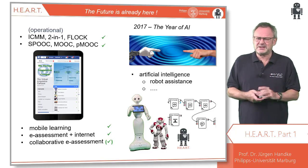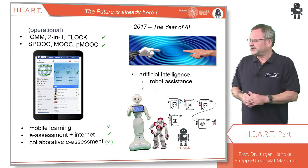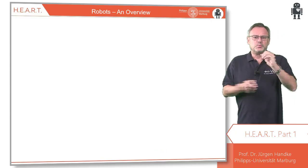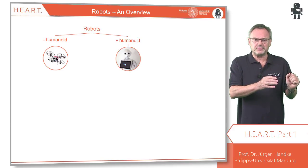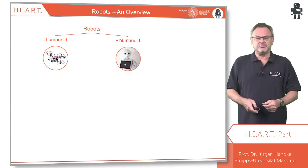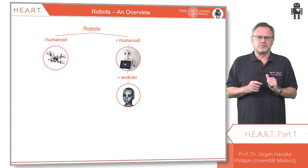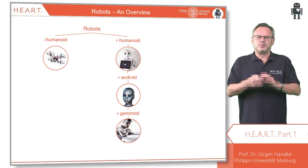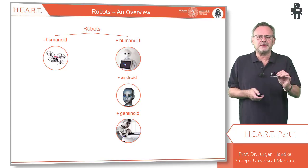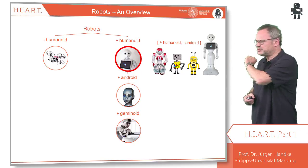But what exactly are humanoid robots? Here is an overview. We differentiate between non-humanoid and humanoid robots. Humanoid robots in turn can be android — that is, not similar but alike humans. And as clones of real humans, we call them geminoid. For several reasons which we have already worked out in HEART, the simple humanoid variant seems to be the most suitable one.